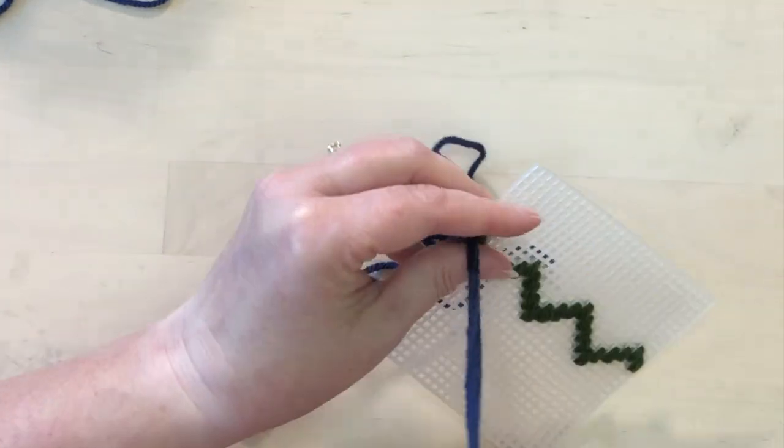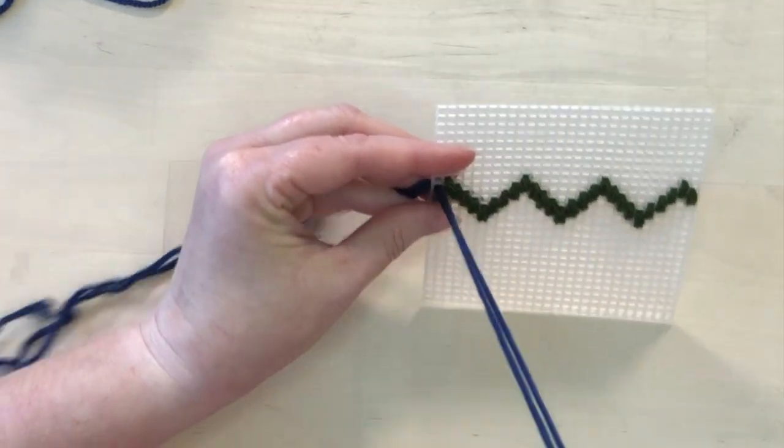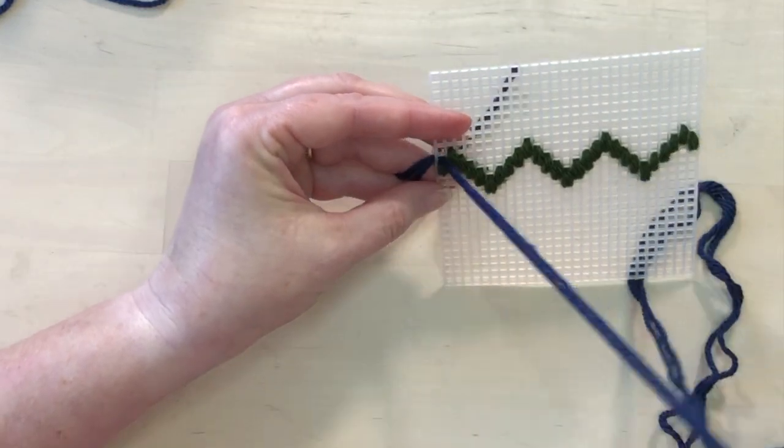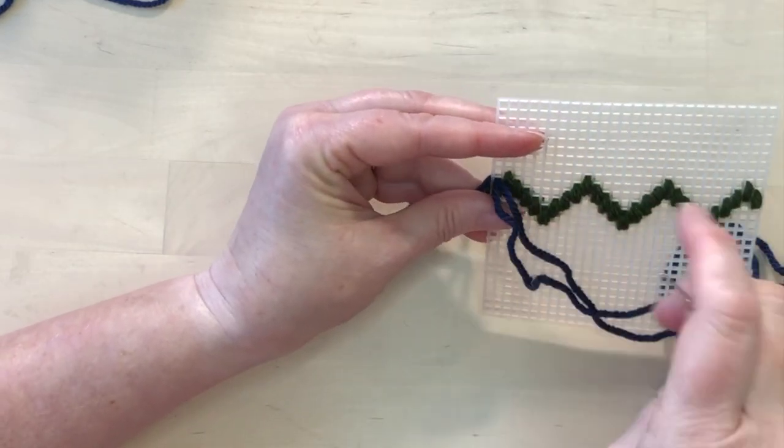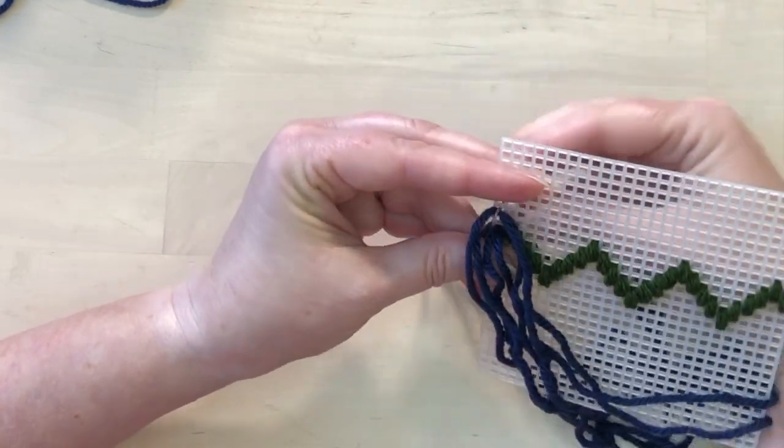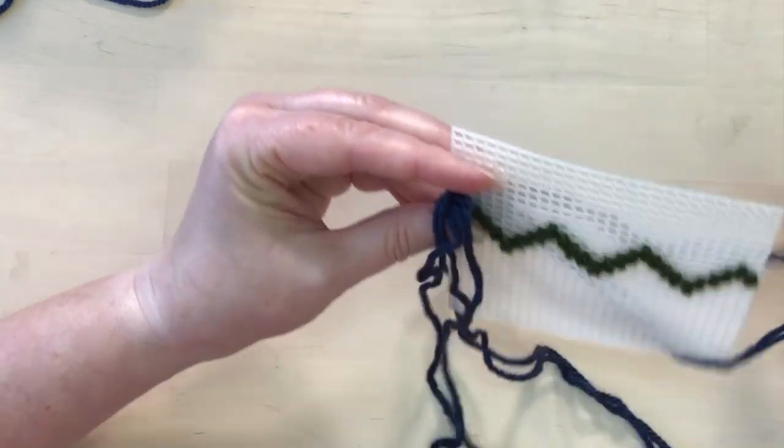So I'm going to start here and I'm pulling it through, and then I'm just going to leave a tail and kind of hold on to that. And then after I've done some stitches, I'll come back and finish off that end.